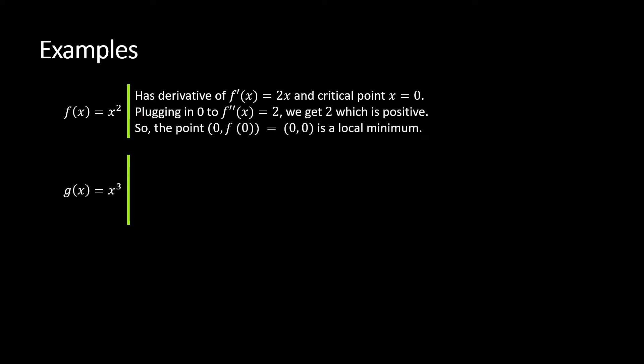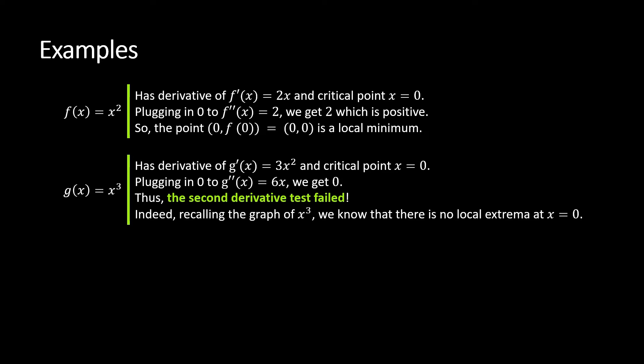What about x cubed? So g(x) = x³, which hopefully you can picture in your head. Taking the derivative, 3x². Again, we have a critical point at zero. If we plug in zero to the second derivative—second derivative is 6x, so plugging in zero we get zero—that tells us the second derivative test failed. In fact, if you think about what the cube looks like, it's some sort of weird up, over, and then up again. But importantly, at zero there's no local extrema. It's not a maximum or minimum, it's some sort of weird turning point thing.